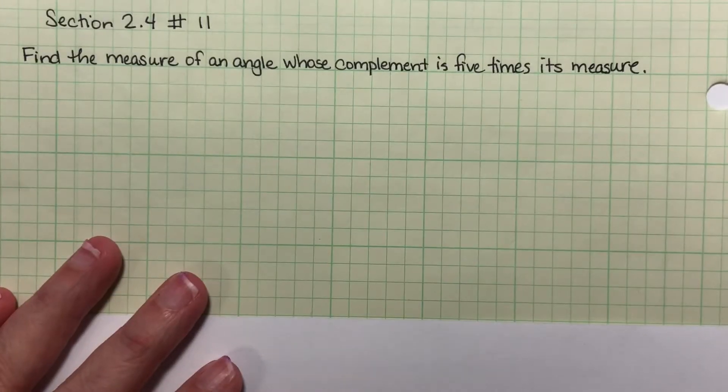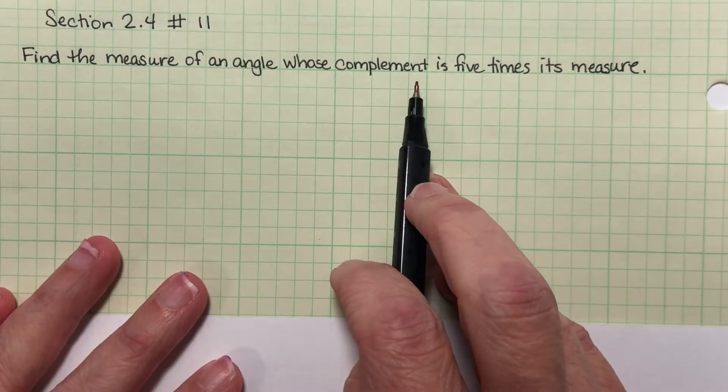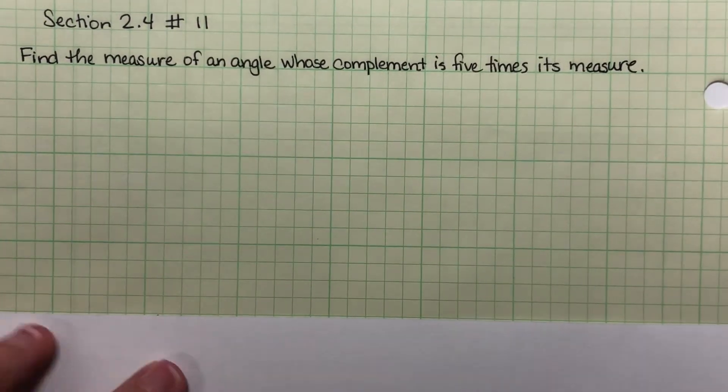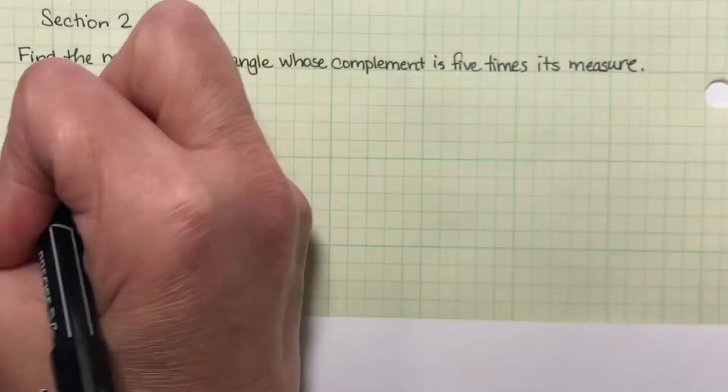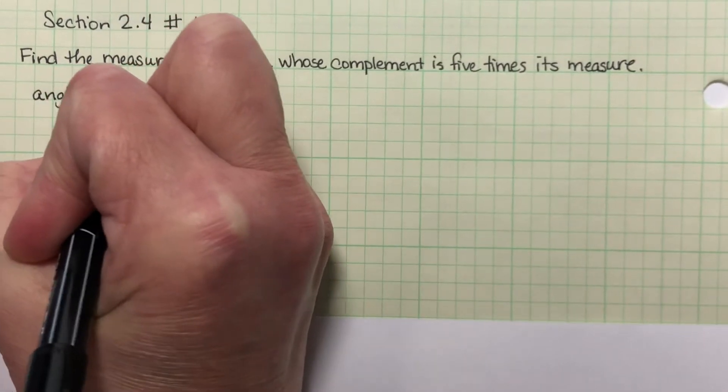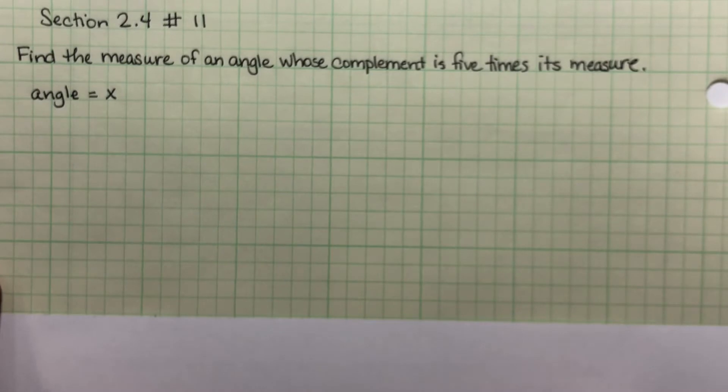Now the thing to remember here is that complements add up to 90, and these always have the same setup. We're looking for the measurement of an angle, so our regular angle we're gonna call X. I don't know what its measure is, but I'm just gonna call it X.